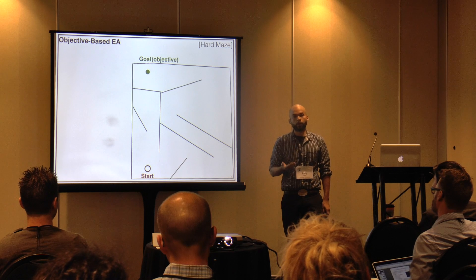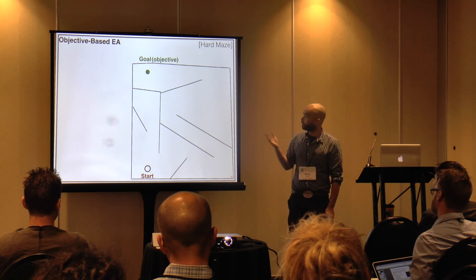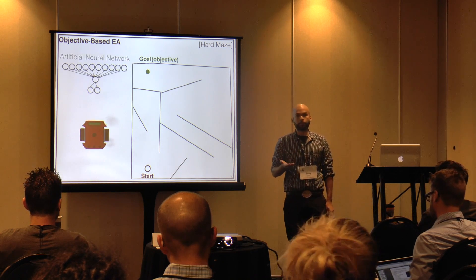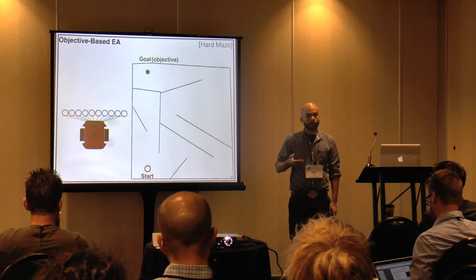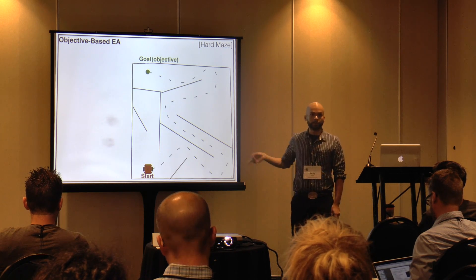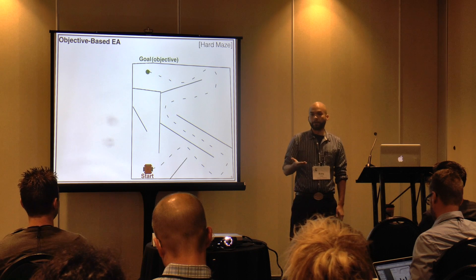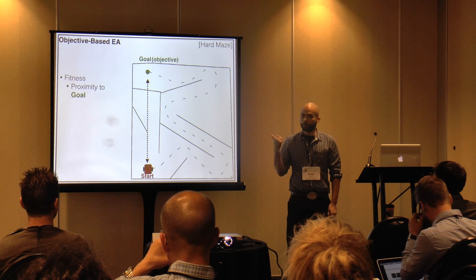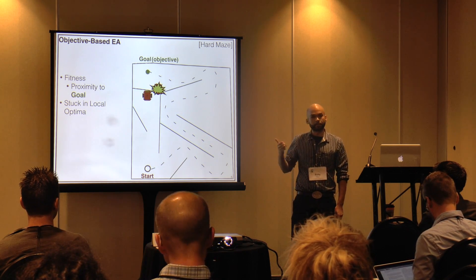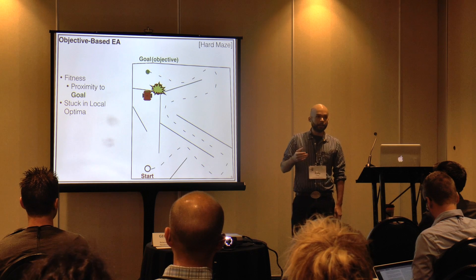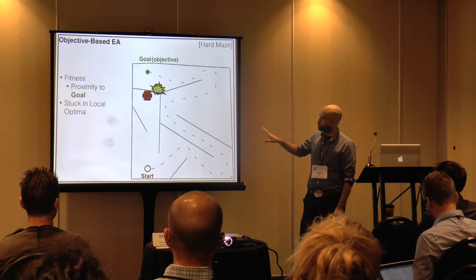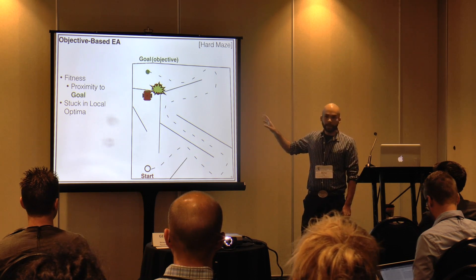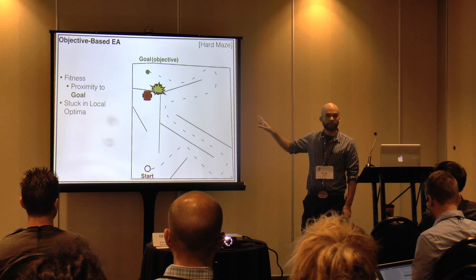This is a typical problem we might want an EA to solve: the perception-based 'hard maze' from the visual Knowledge Search paper. We have a simulated robot controlled by an artificial neural network, and we want it to get from the start location in red to the goal objective in green. With an objective-based EA, the fitness function is proximity to the goal — but very quickly you can see that won't work. We get stuck in a local optimum, a dead end.